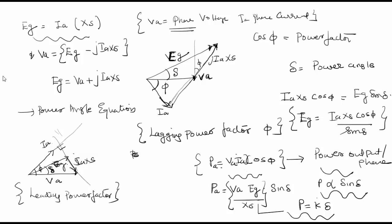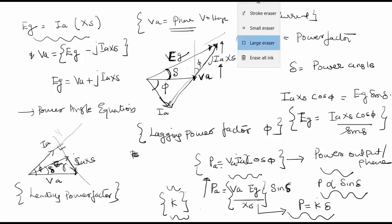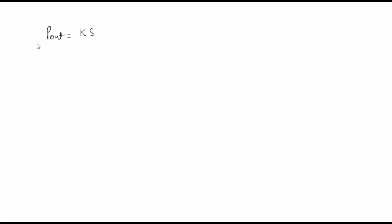P is a function of K, and K can be varied to increase or reduce the power. The power depends on delta. Delta will depend on IA — if current increases, delta increases. If synchronous reactance increases, delta increases and power increases. The power output equals K·sin(delta) where K equals EG·VA divided by XS.